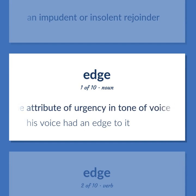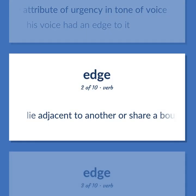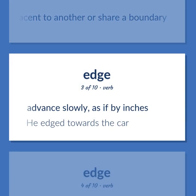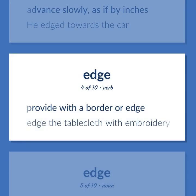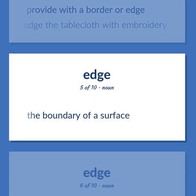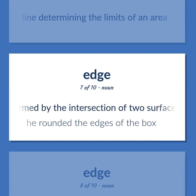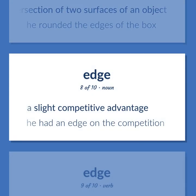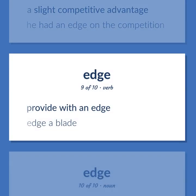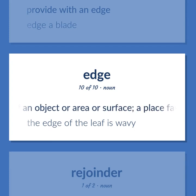Edge: The attribute of urgency in tone of voice — "His voice had an edge to it." Lie adjacent to another or share a boundary. Advance slowly, as if by inches — "He edged towards the car." Provide with a border or edge — "Edge the tablecloth with embroidery." The boundary of a surface. Align, determining the limits of an area. A sharp side formed by the intersection of two surfaces of an object — "He rounded the edges of the box." A slight competitive advantage — "He had an edge on the competition." Provide with an edge — "Edge a blade." The outside limit of an object, area, or surface; a place farthest away from the center of something — "The edge of the leaf is wavy."